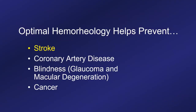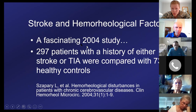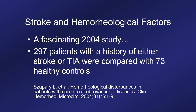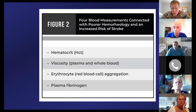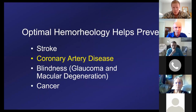Let me give you the example of stroke, which is a leading cause of death. In a 2004 study, researchers looked at several markers of blood fluidity: hematocrit — the percentage of your blood made up of red blood cells — viscosity, which measures blood thickness, the tendency of red blood cells to clump, and a clotting protein called fibrinogen. The worse these markers were, the more likely a person was to have a stroke.